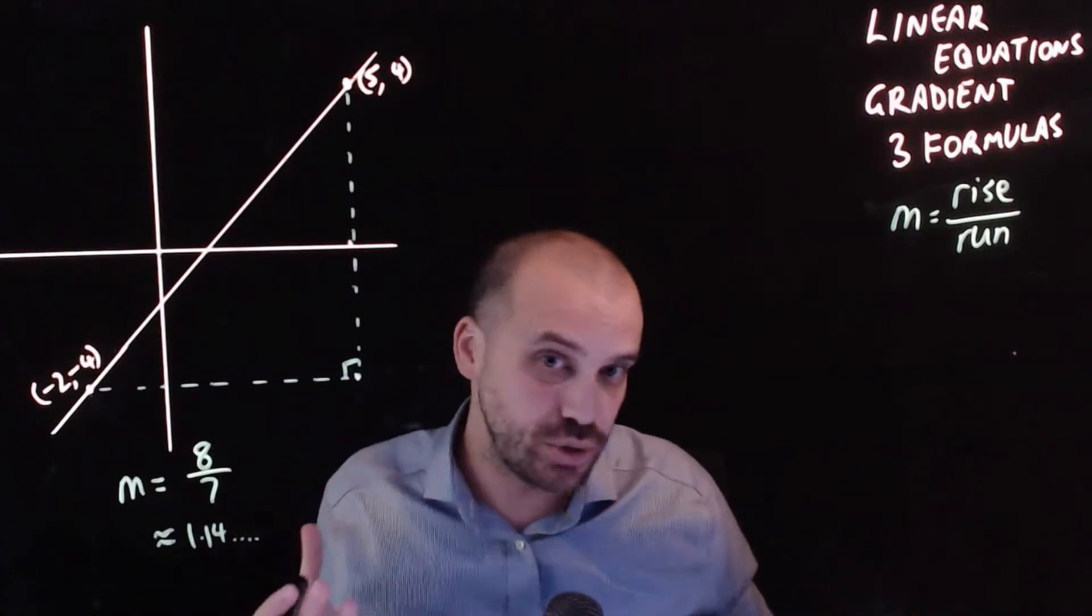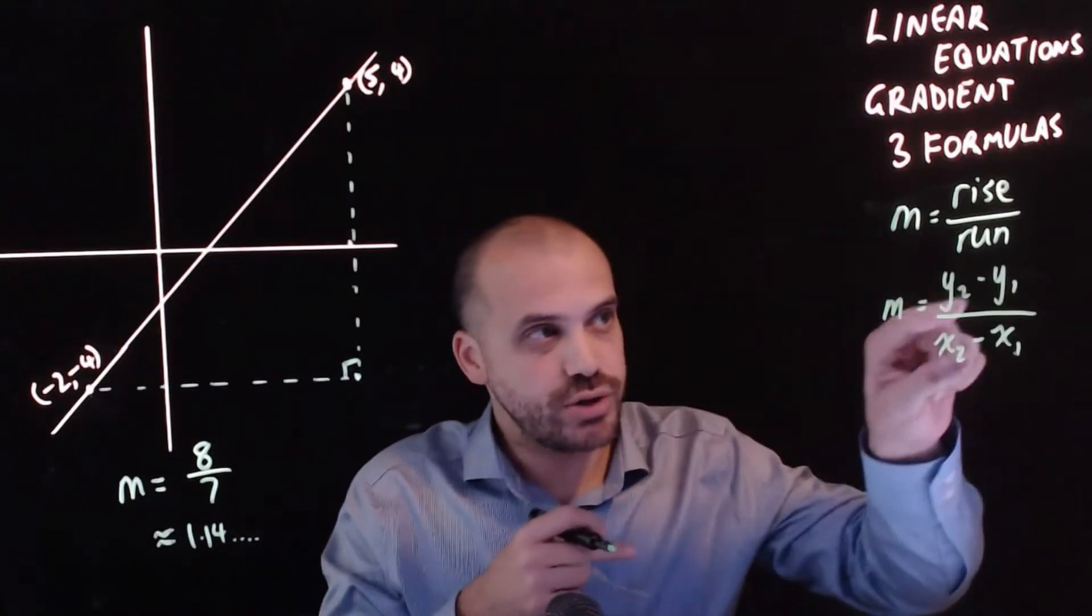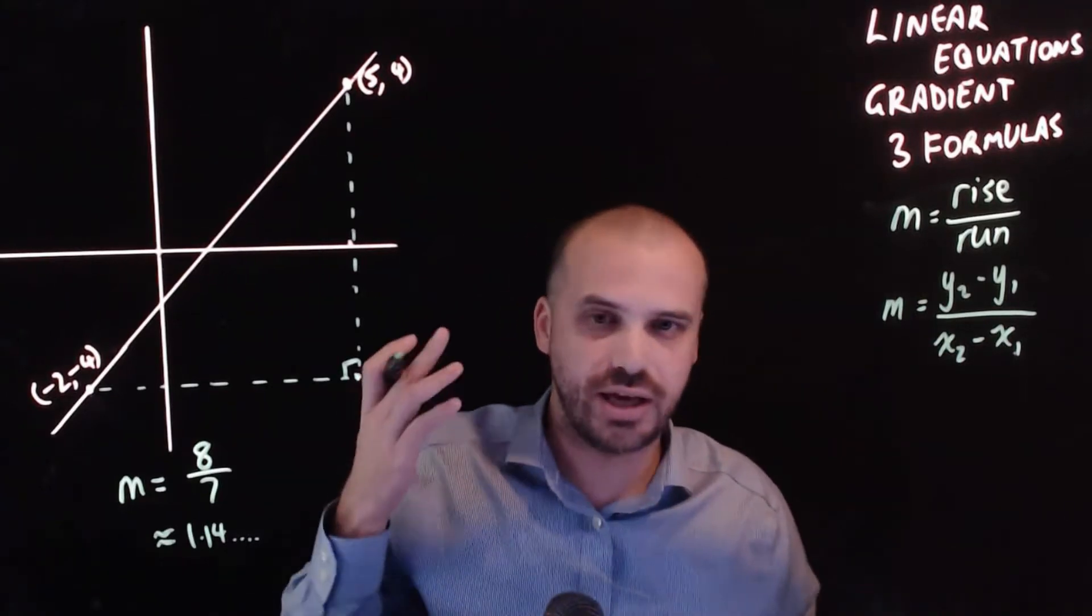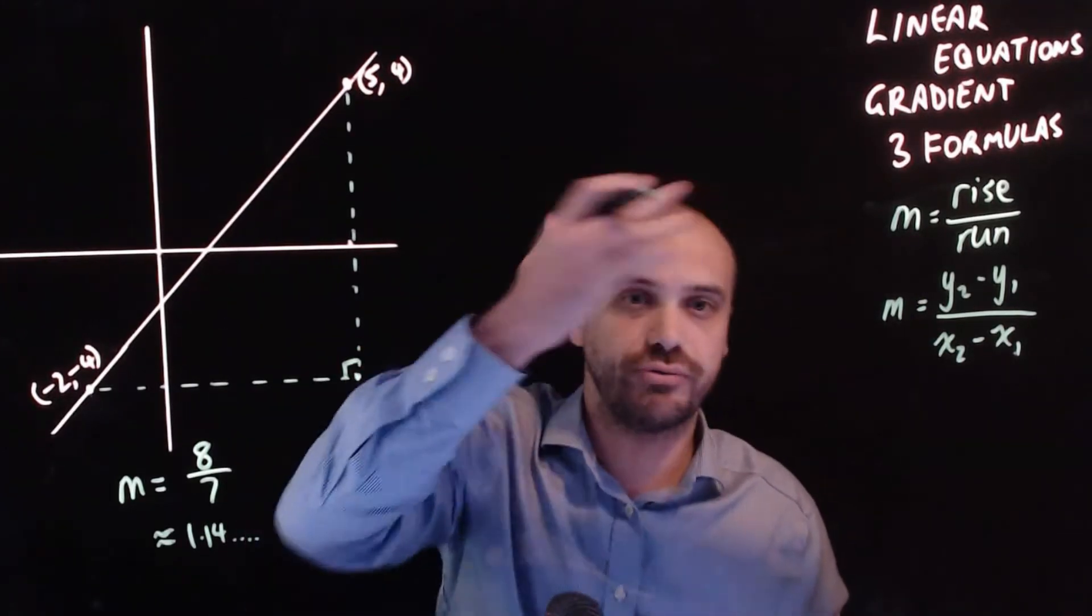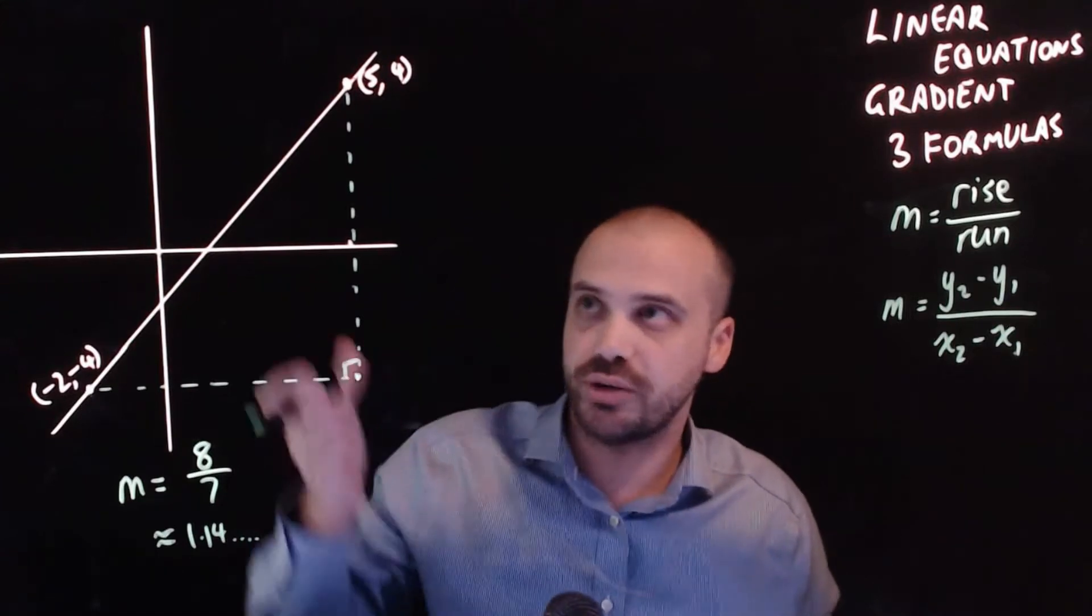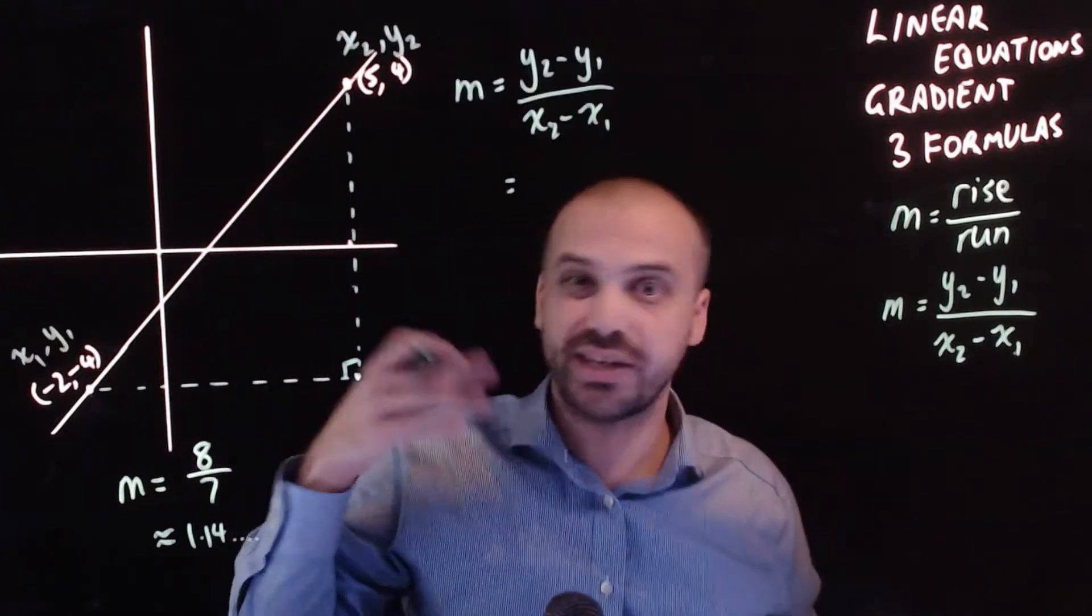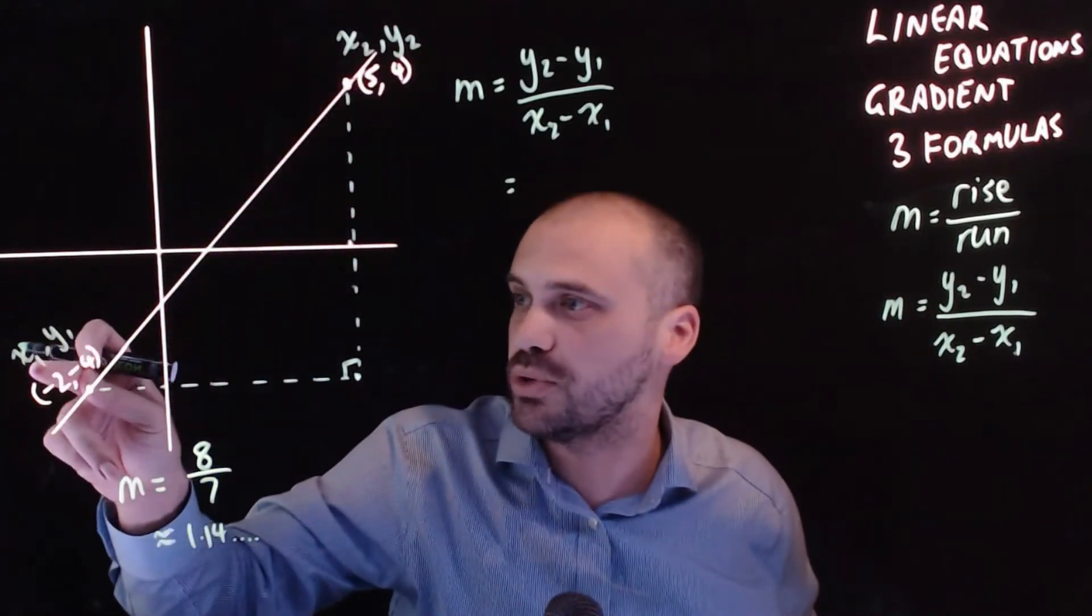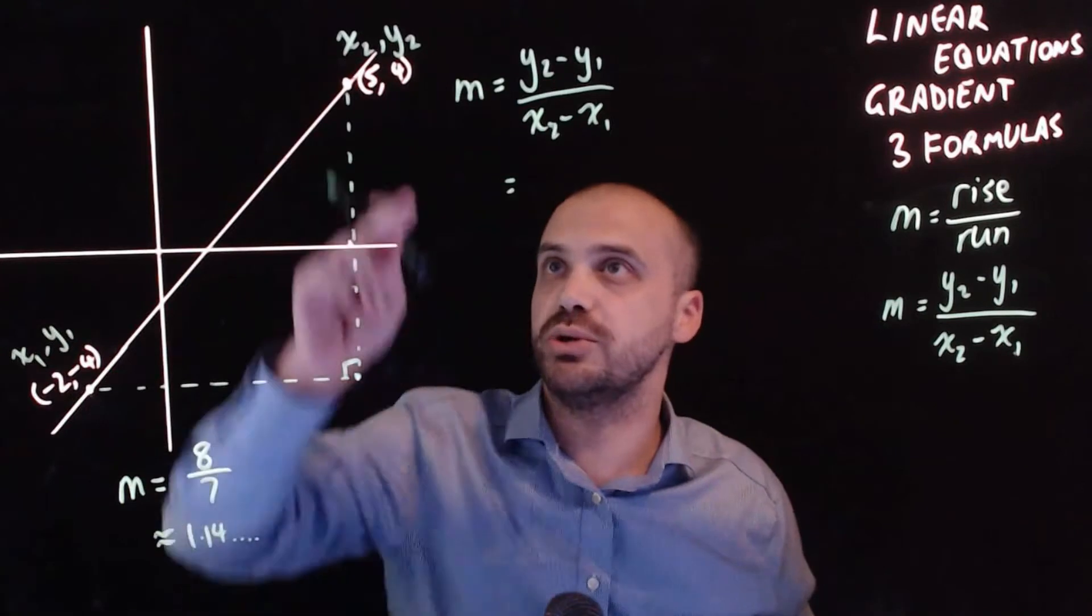There is a second formula that you should already know. m equals y2 minus y1 over x2 minus x1. It's essentially a formalization of rise over run. Let's try it with these numbers here. Now when I do this I get confused a lot. So what I like to do is label these points x2 y2 and label these points x1 y1. Okay let's get to work.